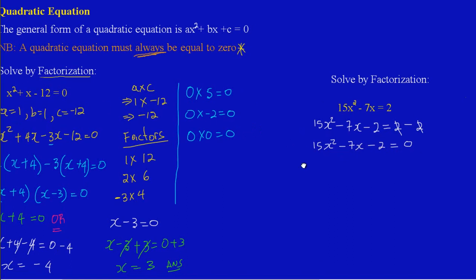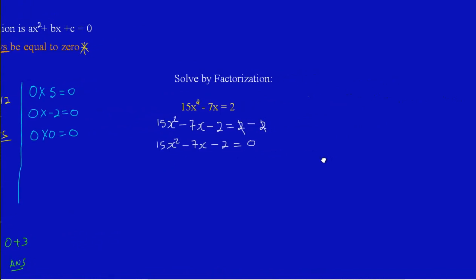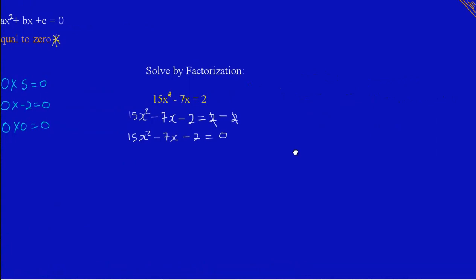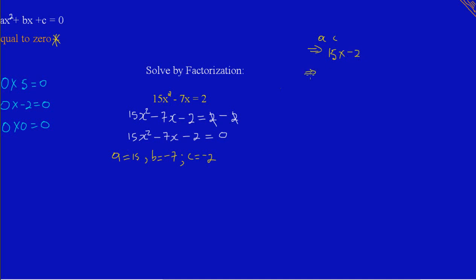Now we're going to need a little bit of space to work with. I am going to find the product of AC. My a is 15, my B is -7, and my C is -2. So AC = 15 × (-2), which gives me -30.